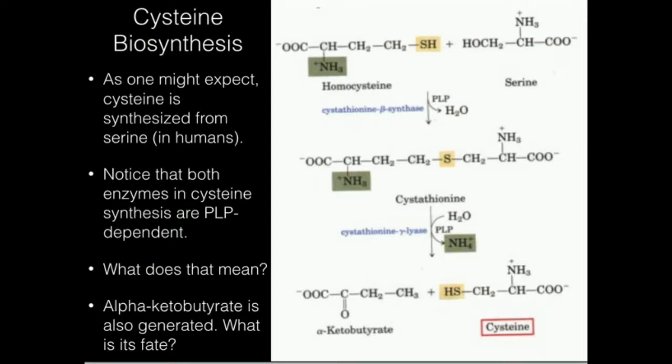Then we're going to split them apart at a different point by cystathionine gamma-lyase, a hydrolytic PLP-dependent enzyme. That's going to give us cysteine, the amino acid — and that's the biosynthesis of it — along with alpha-ketobutyrate.